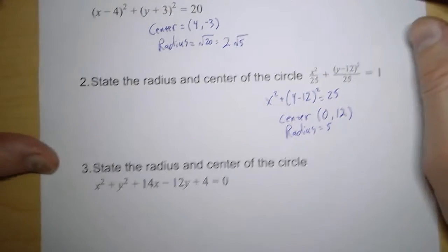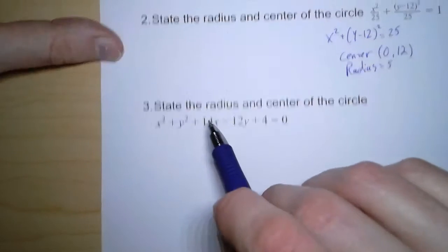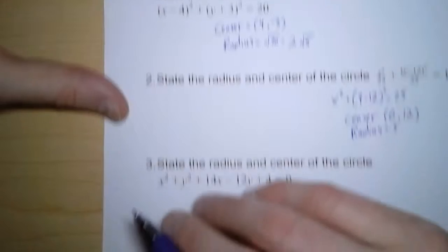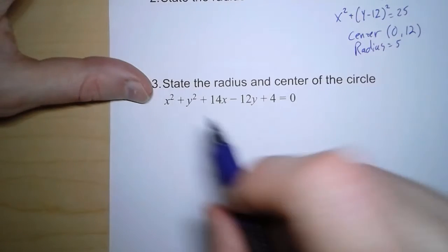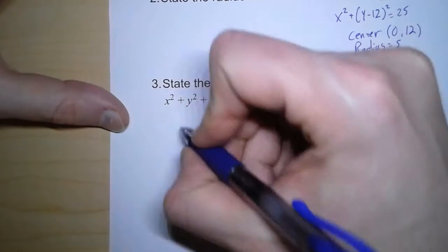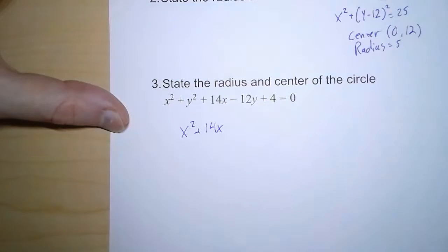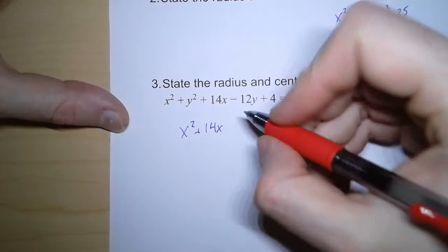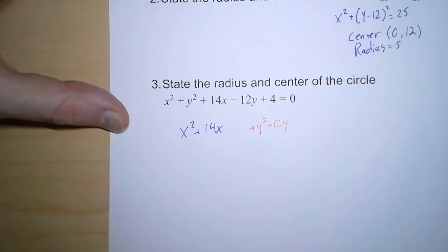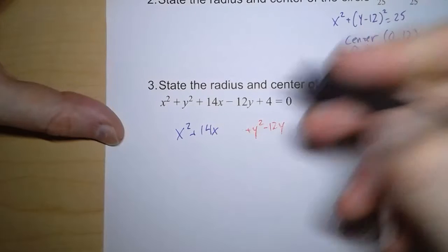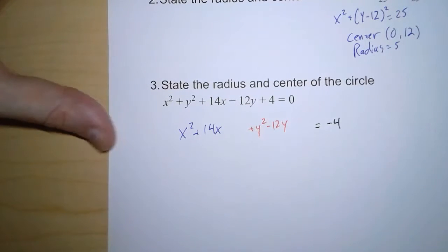Now for number three, notice that it's not in squared form like it is up here in number one. So with number three, we've got a little bit of work to do to get it into that form. So what I'm going to do is I'm going to put everything with x together. So x squared plus 14x, and I'm going to leave a little space. Then I'm going to put the y's together, plus y squared minus 12y. We'll leave a little space. And then we'll set that equal to this number. I'm going to move four over. So it's minus four.